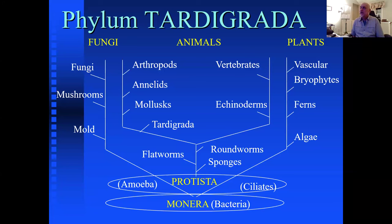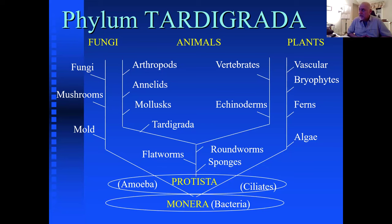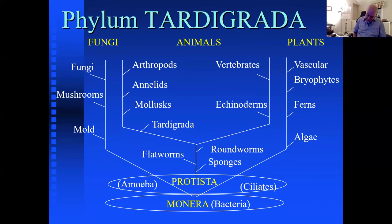Looking at where tardigrades fall on the tree of life, on a chart with fungi on the far left and plants and animals on the far right, tardigrades fall along the line of arthropods. They're not vertebrates, but you can see how they might be related to spiders. Because they move like a worm, we believe they may share lineage with flatworms or roundworms. Sponges and amoeba are further back.